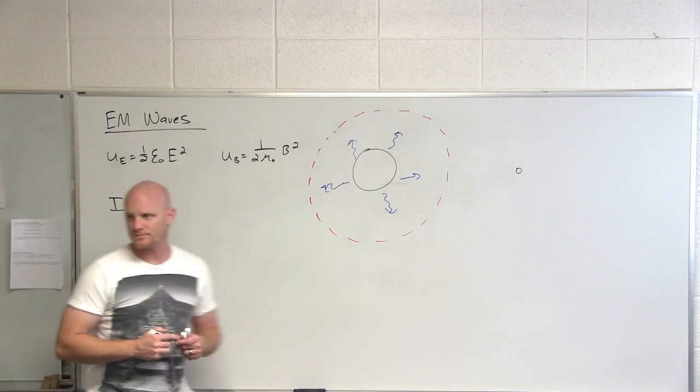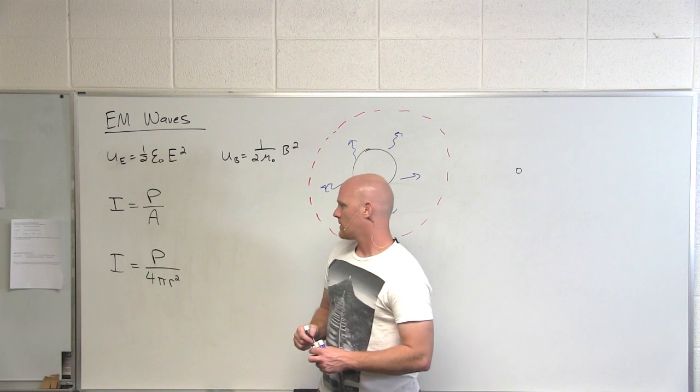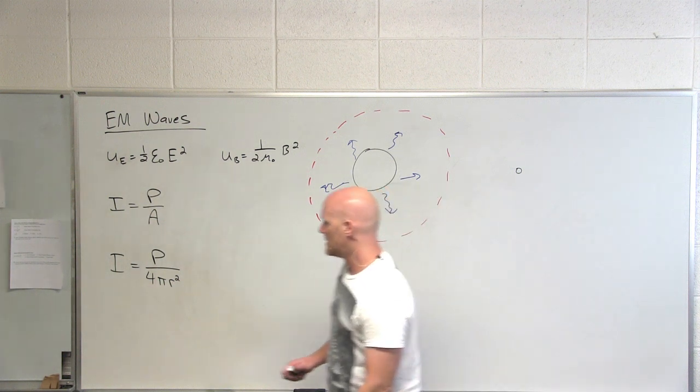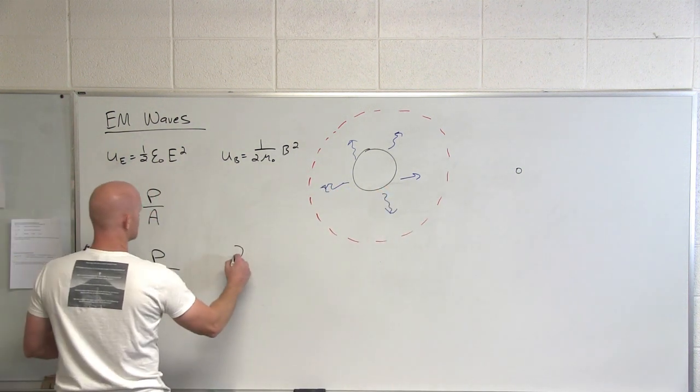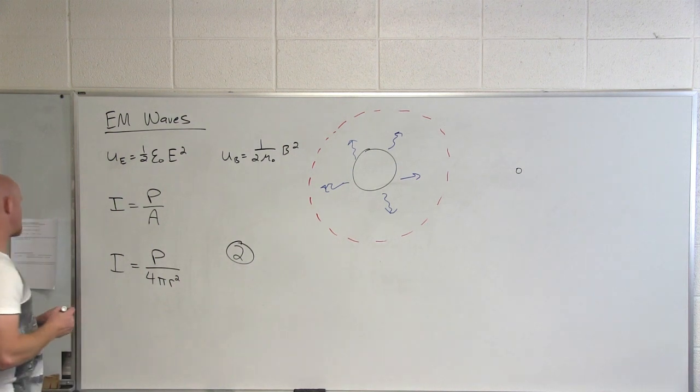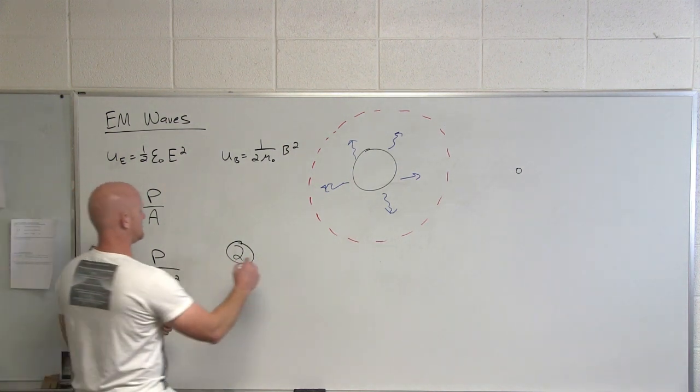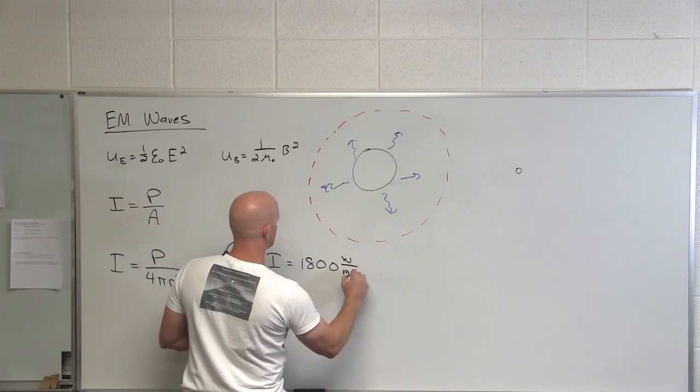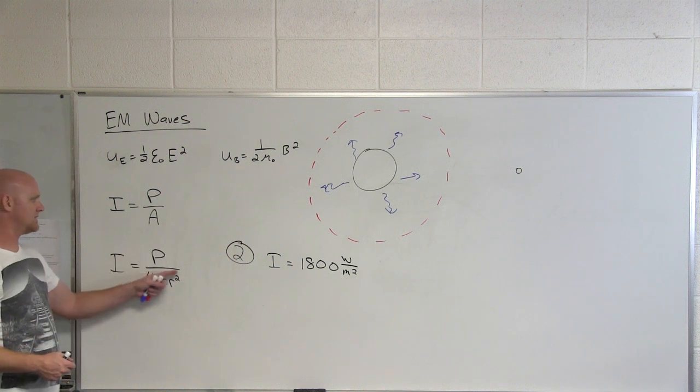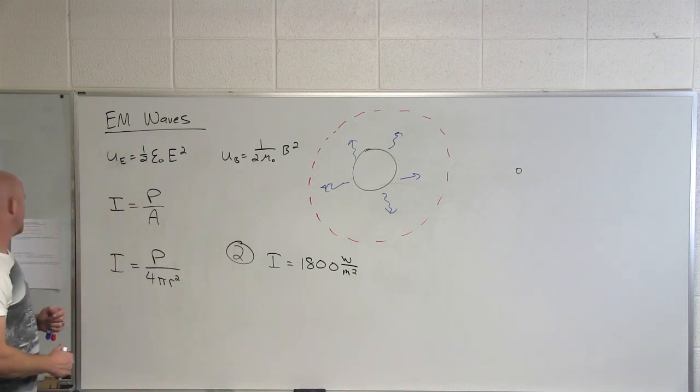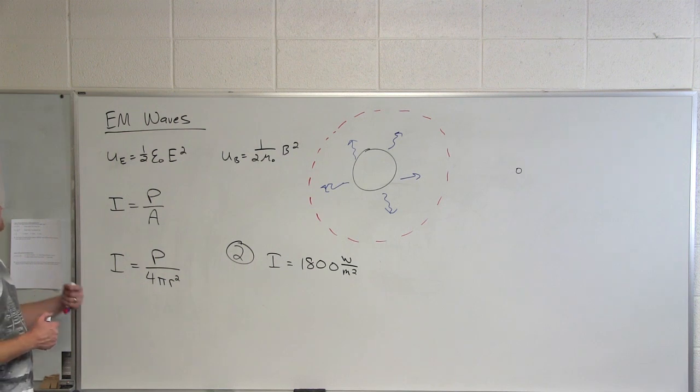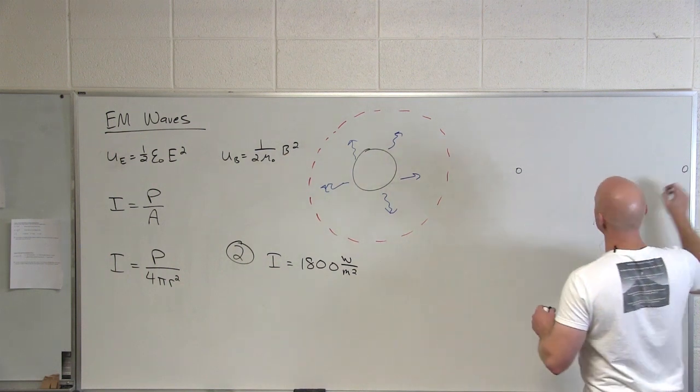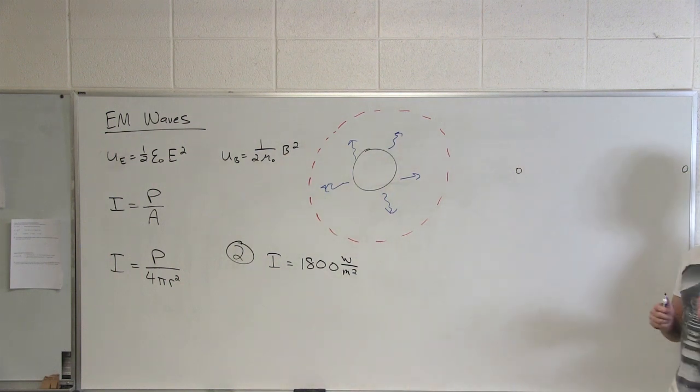Looking at question number two: if the intensity of starlight reaching a planet is 1800 watts per meter squared, notice that's power (watts) and area (meters squared), so intensity is watts per meter squared. What would be the intensity of a planet that is three times further away from this star? First of all, is it going to be higher or lower than 1800? Definitely lower, because it's three times further away.